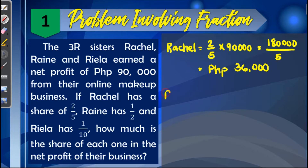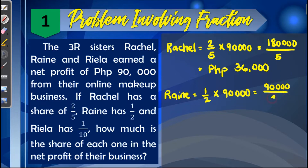For Rain, she will get one-half of the net profit. So one-half times 90,000 gives us 90,000 over 2. Simplifying, we get a value of 45,000.